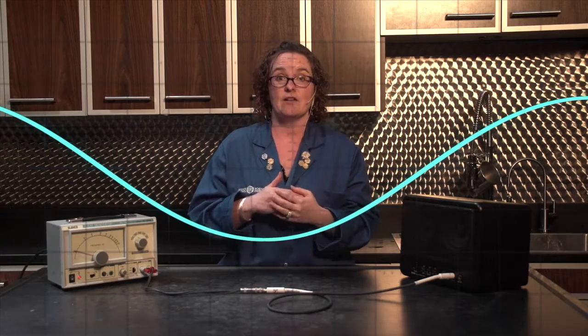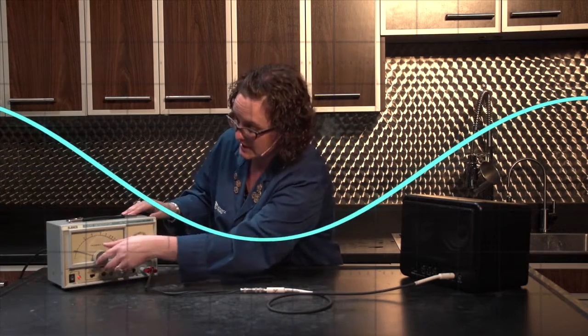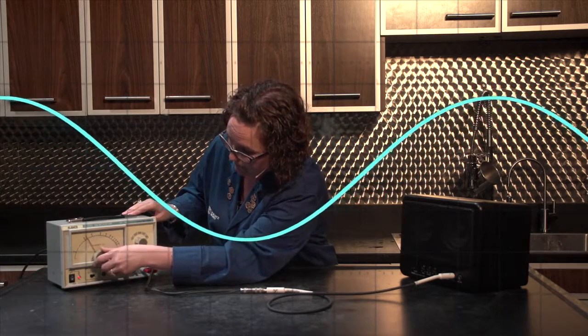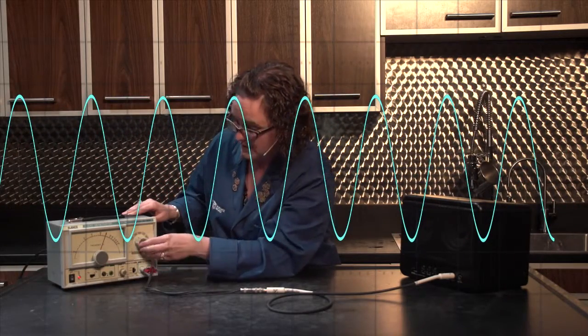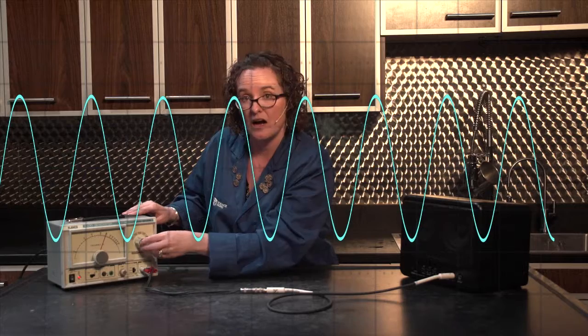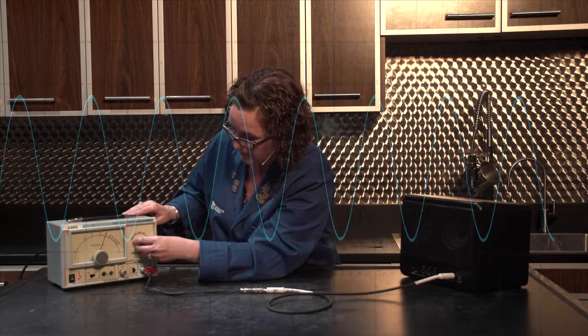On the other end of the scale, if I keep increasing the frequency, and I'll use this knob that increases it by 10 times, notice that we stop hearing the sound. That's because the upper limit of human hearing is around 20,000 hertz, and we get into what we refer to as the ultrasound range.